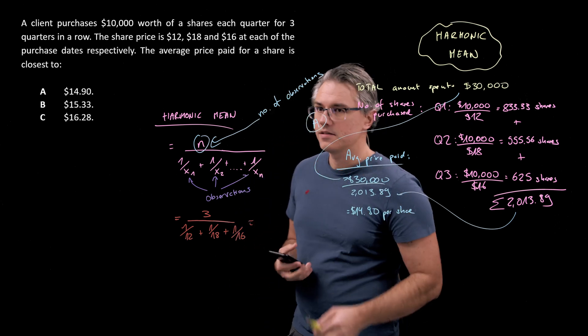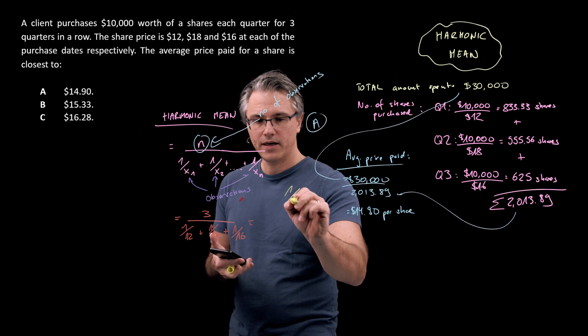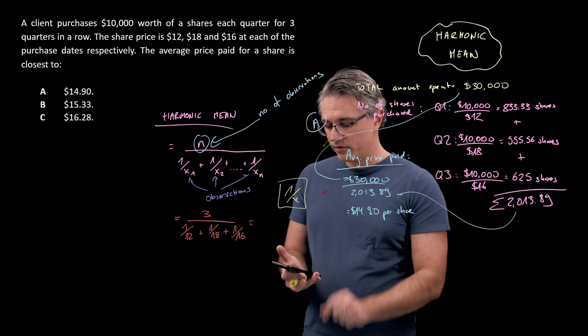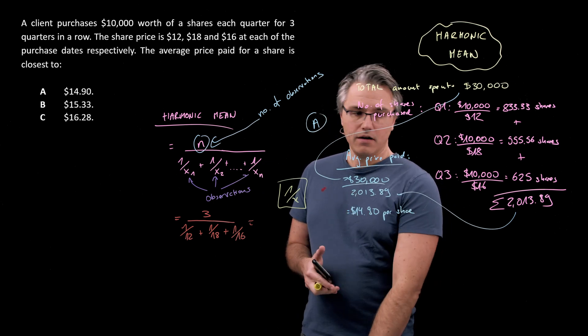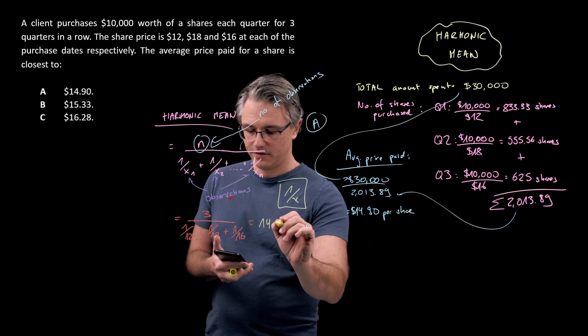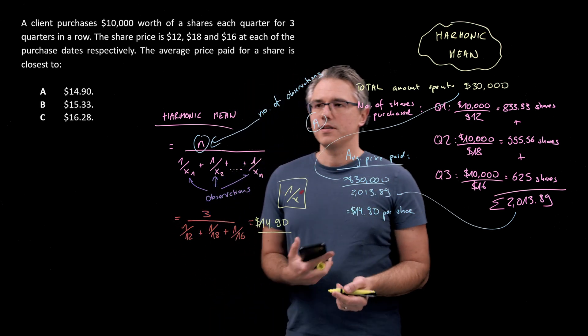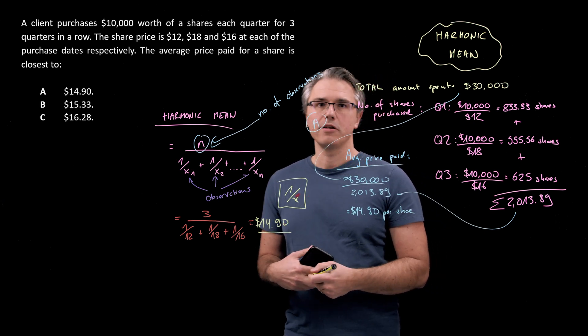So 1 divided by 12 plus 1 divided by 18 plus 1 divided by 16. Now I'm going to press a key on my calculator, which is 1 over X, which is going to give me the reciprocal, and multiply this by 3. And I'm looking at a result of $14.90 per share, which is exactly in line with what we computed before. Brilliant. Problem solved.